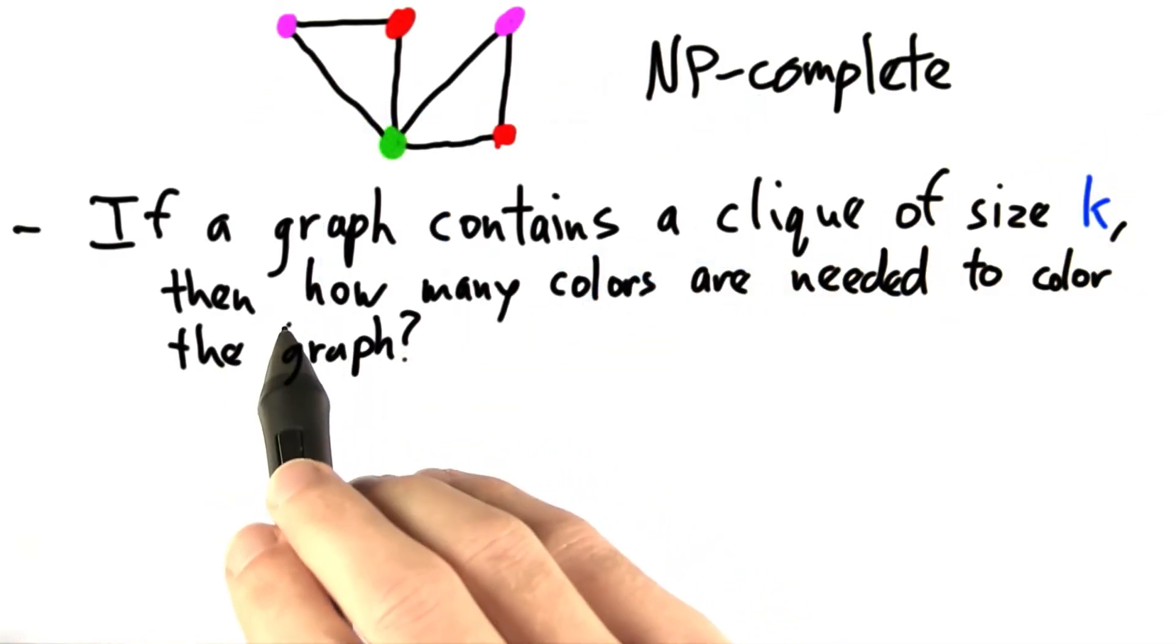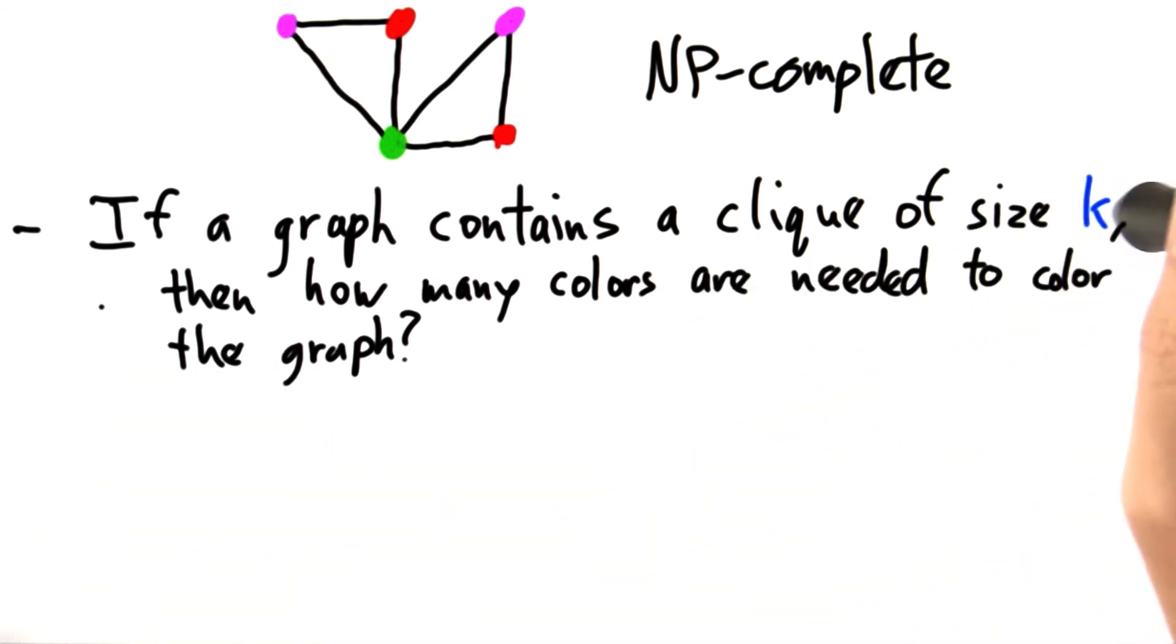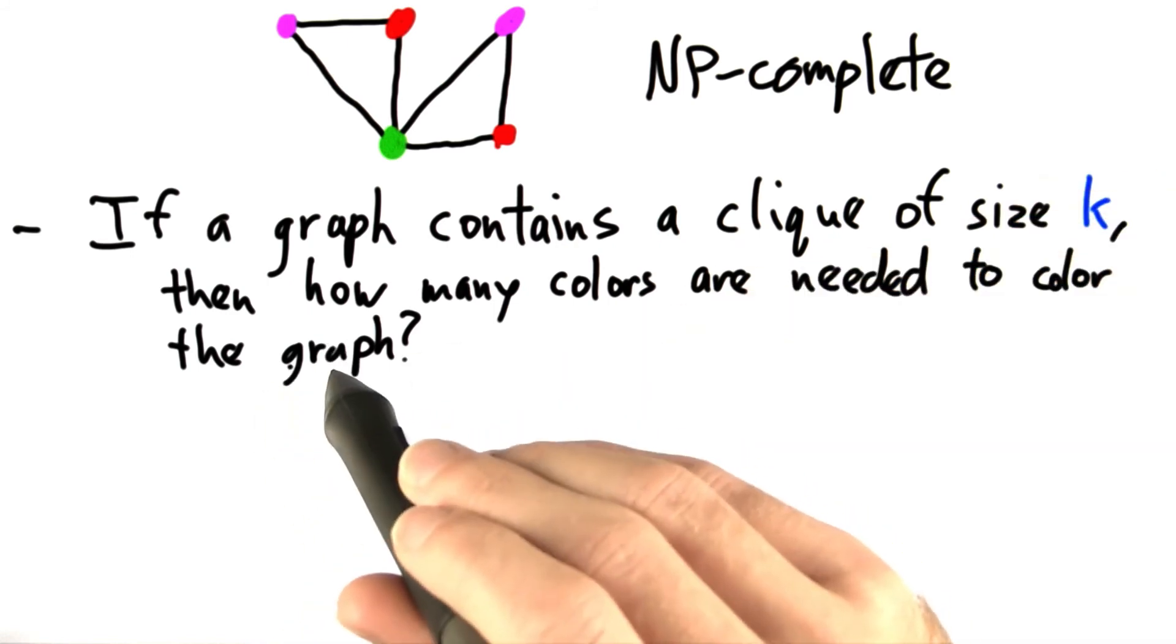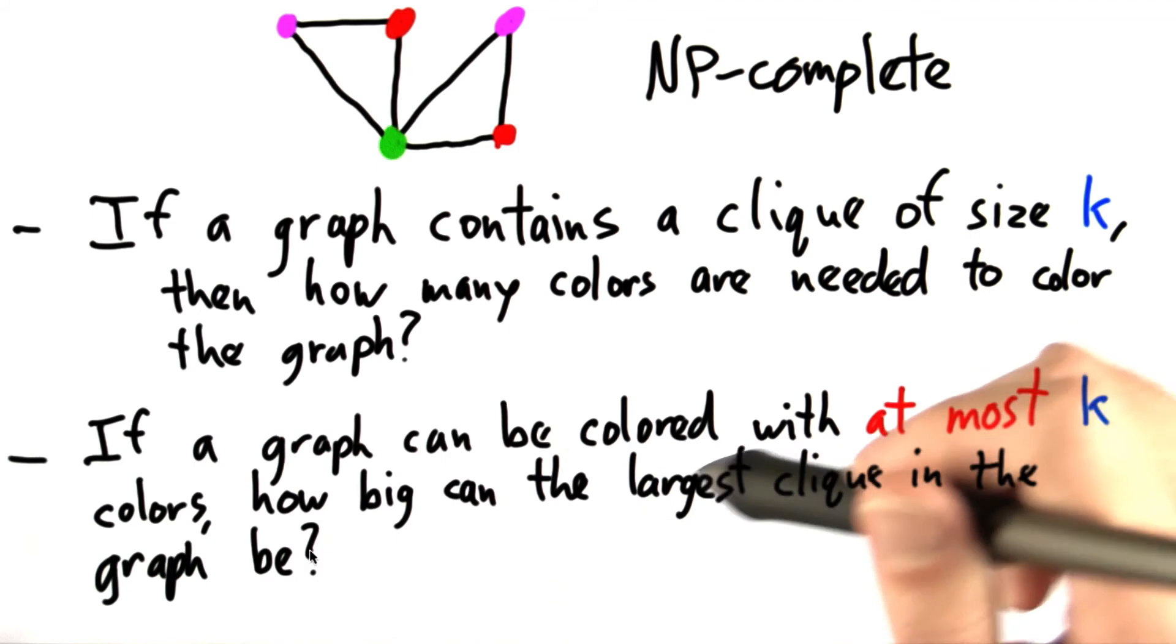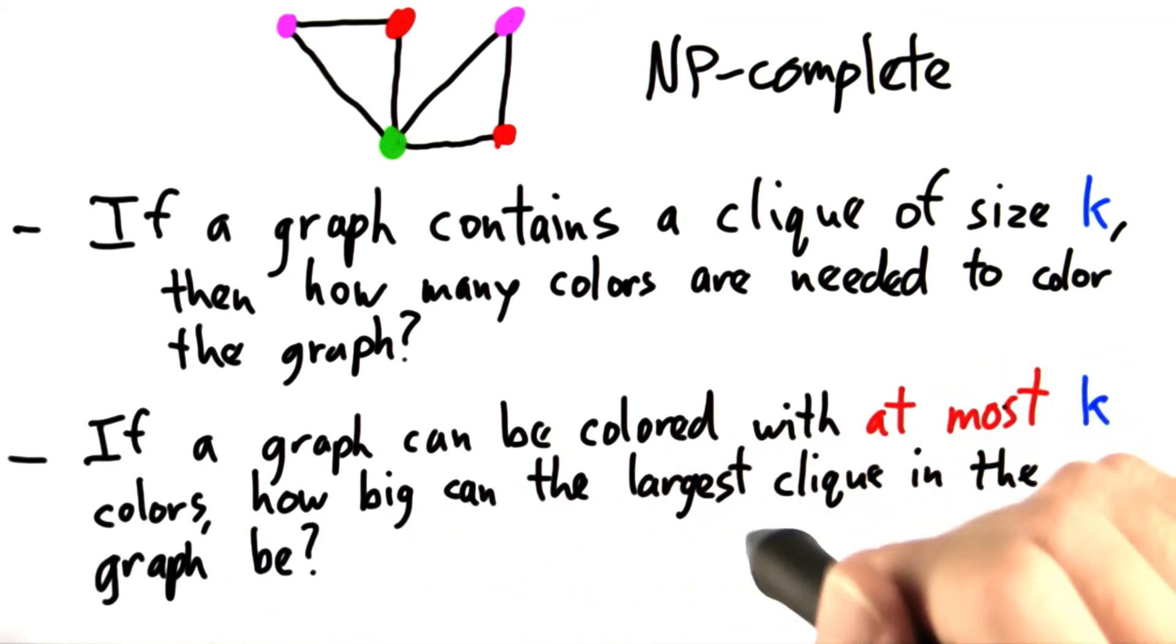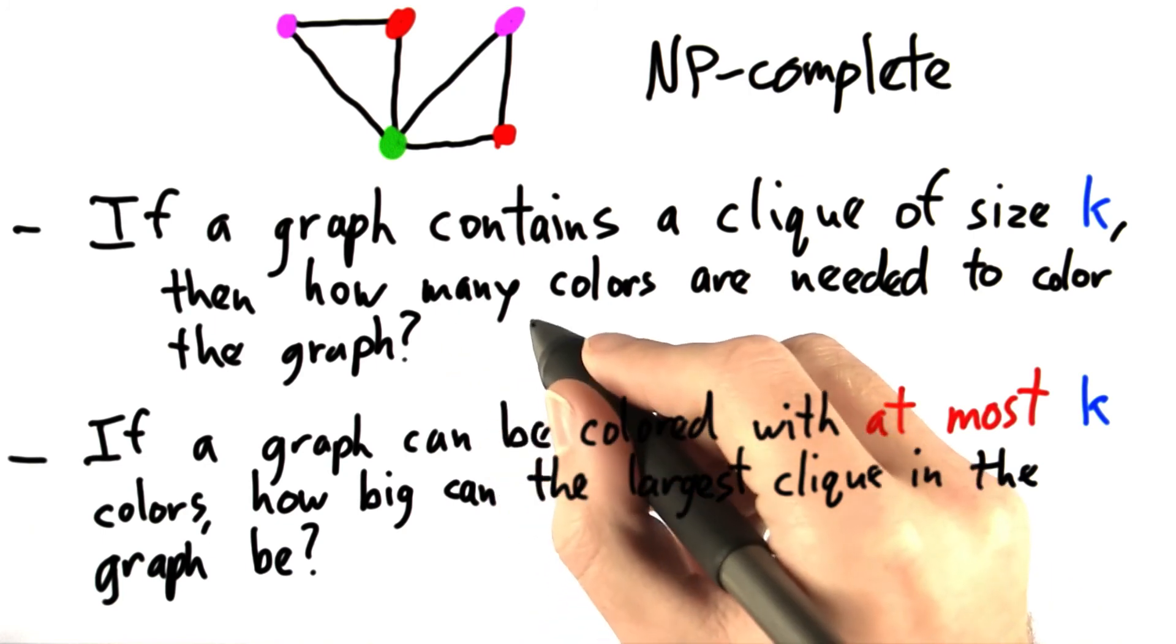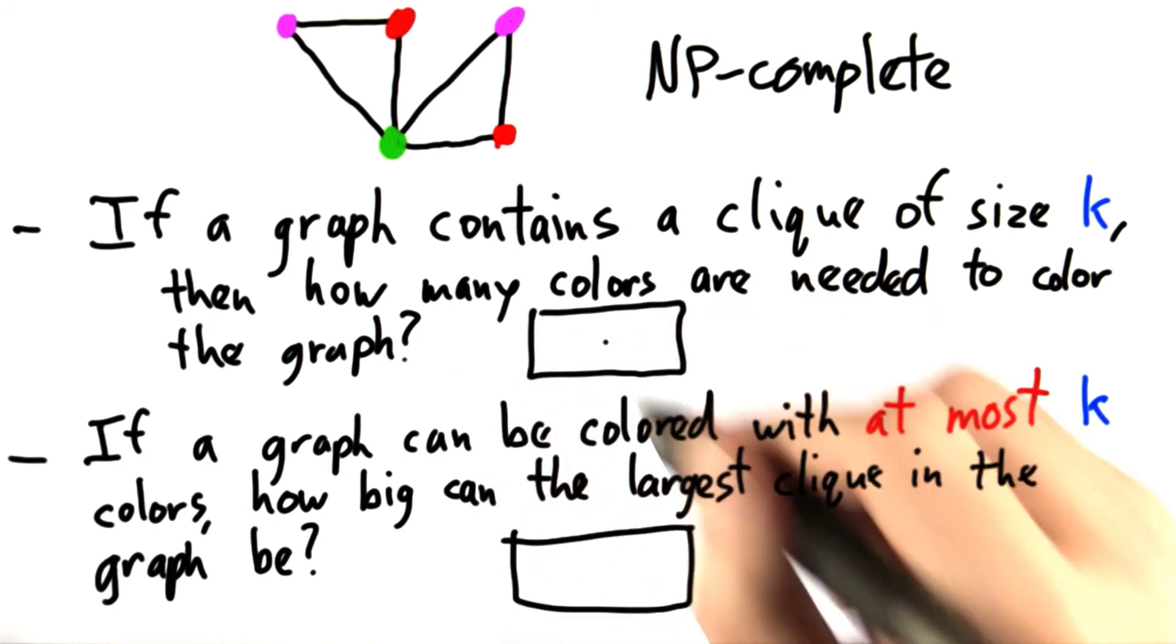The first question we need to answer is: if a graph contains a clique of size k, then how many colors are needed to color the graph at minimum? And the second question is, conversely, if a graph can be colored with at most k colors, how big can the largest clique in the graph be? Go ahead and enter your responses in the text boxes provided.